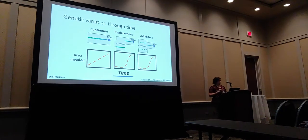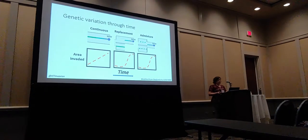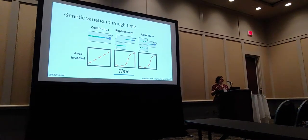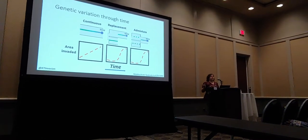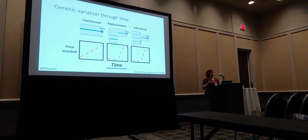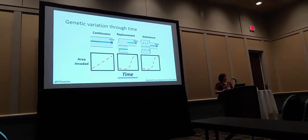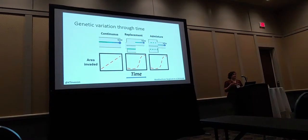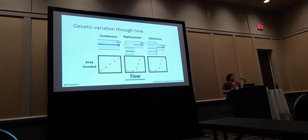Does an invasive species start to spread just as soon as it's introduced? Did just a single population show up — the simplest model, a continuous population model? Or, as is often thought to be the case, is there a lag period? What triggers the end of that lag period? It could be that the time is required for the perfect genotype to show up and replace all others — that replacement event being the end of the lag phase. Or it could be that admixture takes place and increases genetic variation, and it's that admixture event that triggers the end of the lag phase. For most species, we really don't have enough information to know.